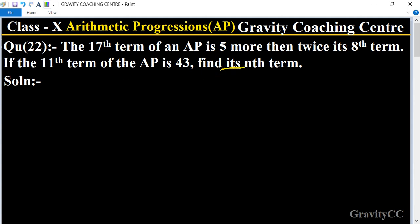In this question, given that the 17th term is 5 more than twice its 8th term, means a17 equals 2 times the 8th term plus 5. And the 11th term is 43, so a11 = 43.